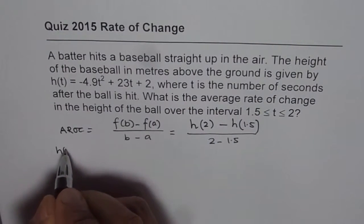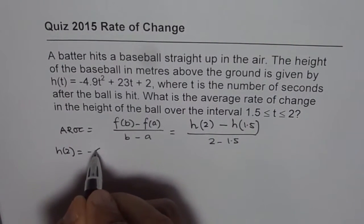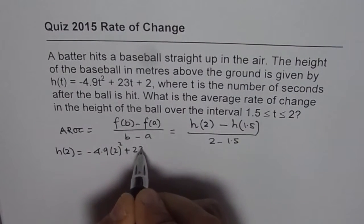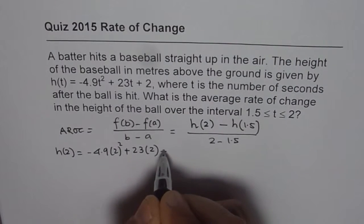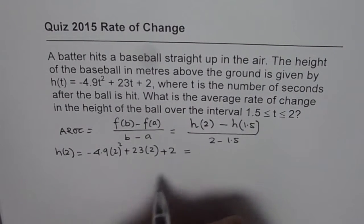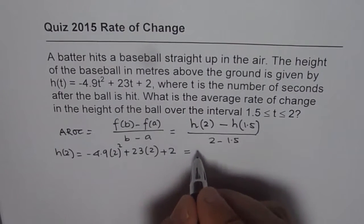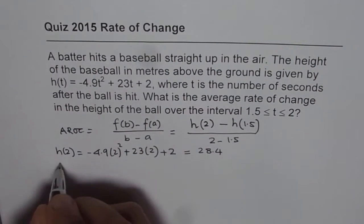So h(2) will equal -4.9(2)² + 23(2) + 2. As calculated by the student, I will just write down the value: 28.4. Use your calculators.